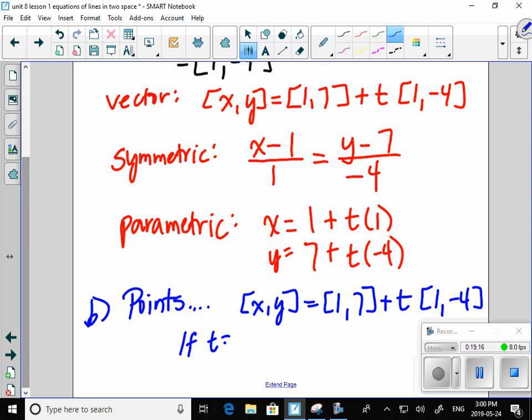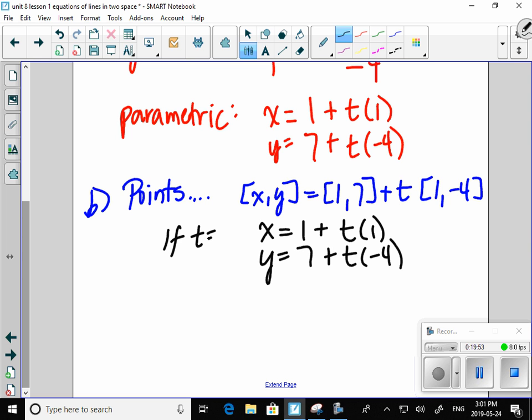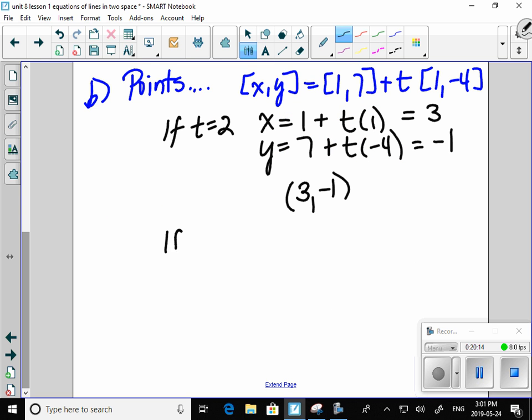So, if t equals 2, for instance, then my x, y would be... I'm just thinking out loud to myself that I'm wondering if I should have written it in parametric. Let's do that. Let's write it in parametric. X equals 1 plus t times 1. Y equals 7 plus t times negative 4. So, if t equals 2, my x value would be 1 plus 2 times 1 is 3. If t equals 2, I have 7 plus 2 times negative 4 is negative 8, negative 1. And, I have generated a point, 3, negative 1. Say that t equals 3. That'll get me another point. X equals 1 plus 3 times 1. Y equals 7 plus 3 times negative 4. 4, negative 5. 4, negative 5 is a point on that line.